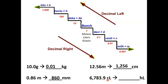Now we're finally not going to start at meters, liters, and grams. We could start anywhere on the chart. This time, we're going to start at centi and go to hecta — one, two, three, four places to the left — ending up with 0.67839.